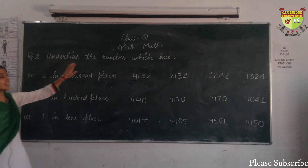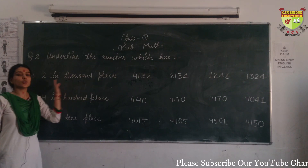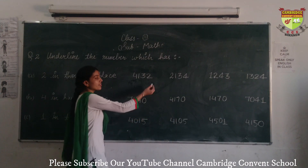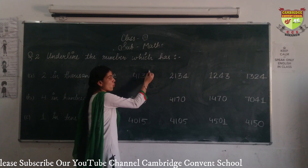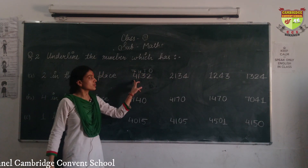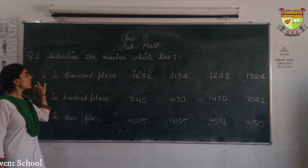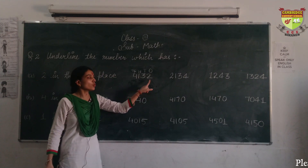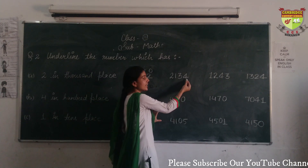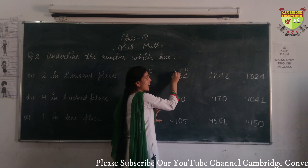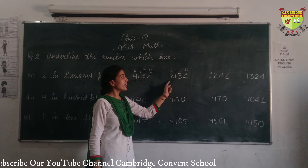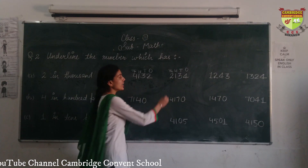Question 2: underline the number which has 2 in the 1000's place. We read a number starting from the extreme right: 1's, 10's, 100's, and 1000's. For 4,132: 2 is in 1's place — not 1000's. For 2,134: 2 is in the 1000's place, so we underline this number. For 1,243: 2 is in the 100's place.